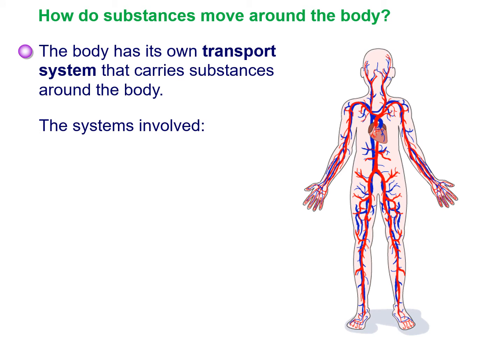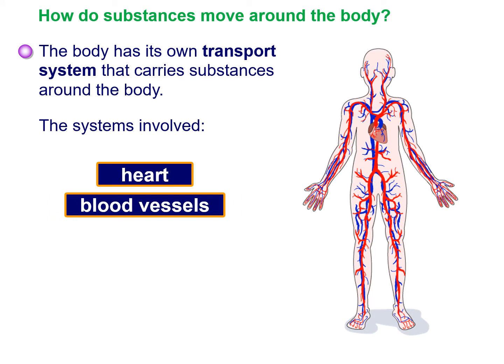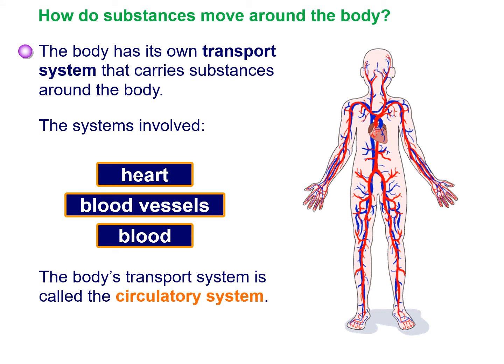Our first question is: how do substances move around the body? The body has its own transport system that carries substances around the body. The systems involved include the heart, which is our focus today, blood vessels — which will be a lesson in itself — and what's in the blood and how it's carried around. The body's transport system is called the circulatory system.